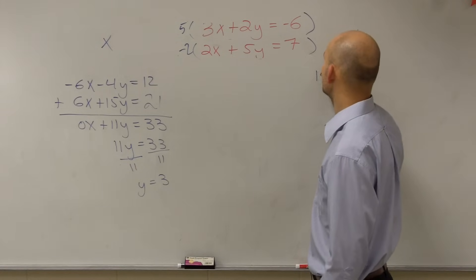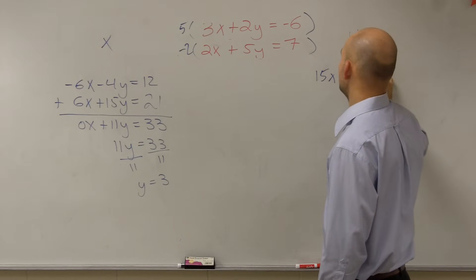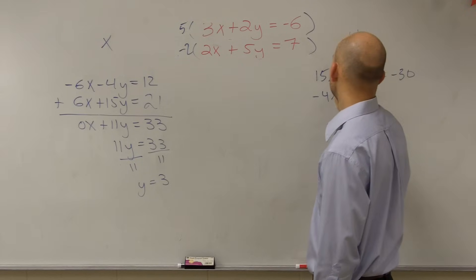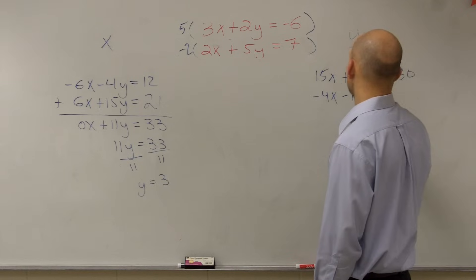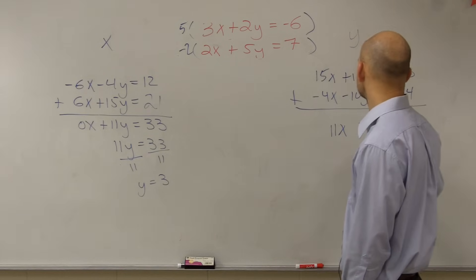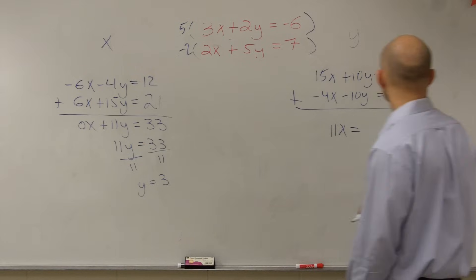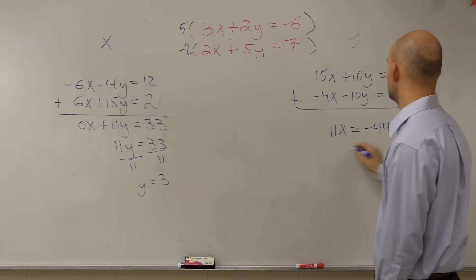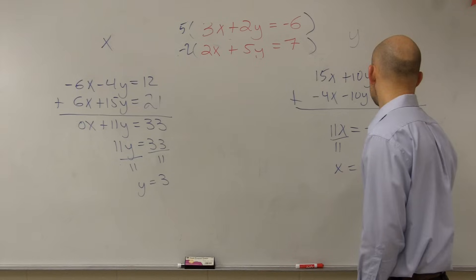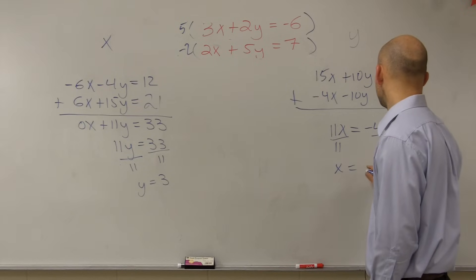So let's do this one. Let's do 15x plus 10y equals negative 30. And then here I'd have negative 4x minus 10y equals negative 14. Now, when I add these two equations, do I get rid of my y? Yeah. So I end up with 11x equals a negative 44. It's a negative. 11x equals negative 44. So x equals negative 4.